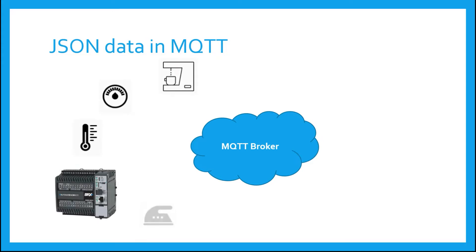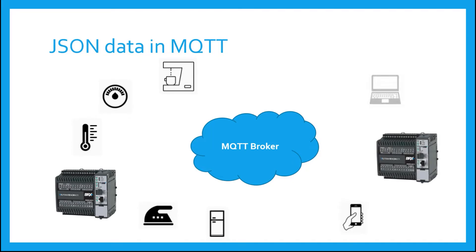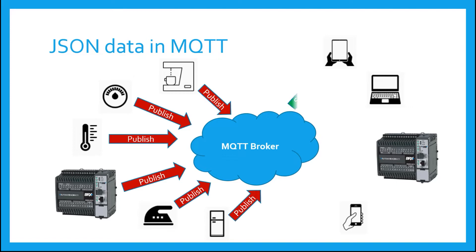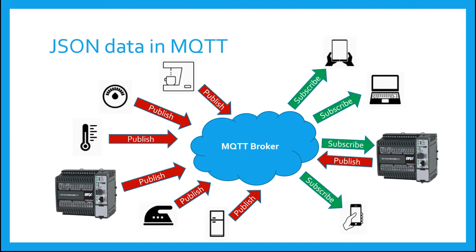In MQTT, there can be many devices exchanging data with one another via the broker, and all these various devices can publish their data to the broker in any form they choose. However, if that data is to be easily understood, then they could use JSON as a data format. And since JSON is always in text and it's self-describing — that is, it's easy to read — the subscribers can more readily understand and view this data.